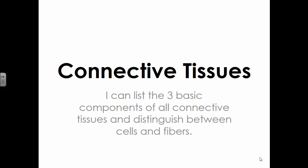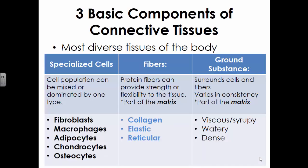Moving into connective tissues: connective tissues are the most diverse tissues within the human body. There are lots of examples, but it's a good starting point because they are so diverse. In order to determine that it is a connective tissue and not epithelial, muscular, or neural tissue, we would look for three basic components: specialized cells, fibers, and the presence of a ground substance.